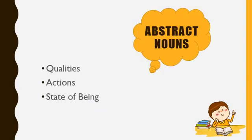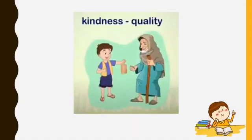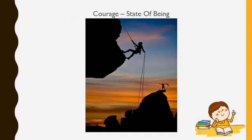Abstract nouns actually refer to qualities, actions, and states of being. For example, kindness is a quality — not everybody has it. Laughter is an action. Courage is a state of being; see, this person has the courage to climb mountains.